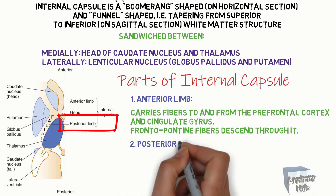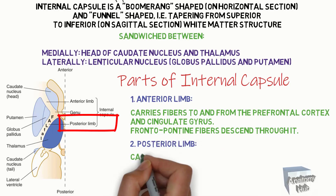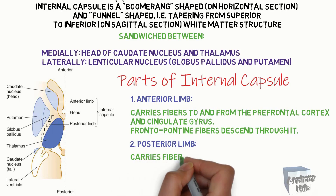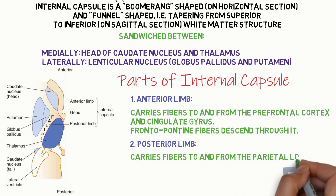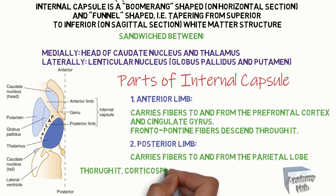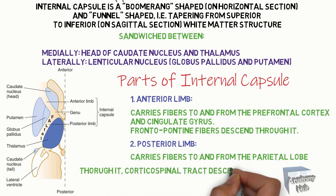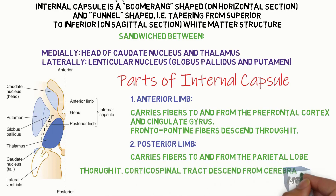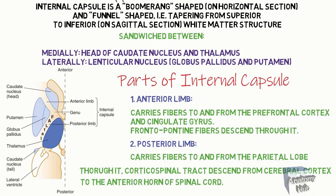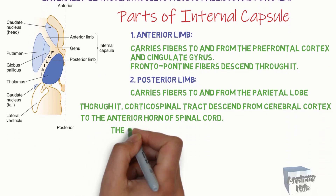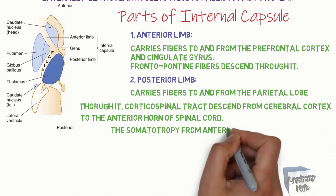Part 2: Posterior limb. It carries fibers to and from the parietal lobe. The corticospinal tract descends from the cerebral cortex to the anterior horn of the spinal cord. The somatotopy from anterior to posterior is arm, trunk, and leg.